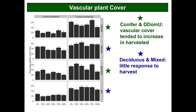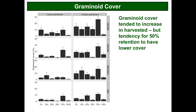Looking at graminoid cover — grasses and sedges — they're known to respond very positively to increases in light that come with thinning the canopy. In general, graminoid cover tended to increase in the harvested treatments across all four forest types, although interestingly the 50% retention was sometimes lower, probably being replaced by another plant species. The general trend is an increase in graminoids with all harvesting treatments. In the CDOM forest, there was a dramatic increase in grass cover even with just the 75% retention treatment compared to the unharvested condition.